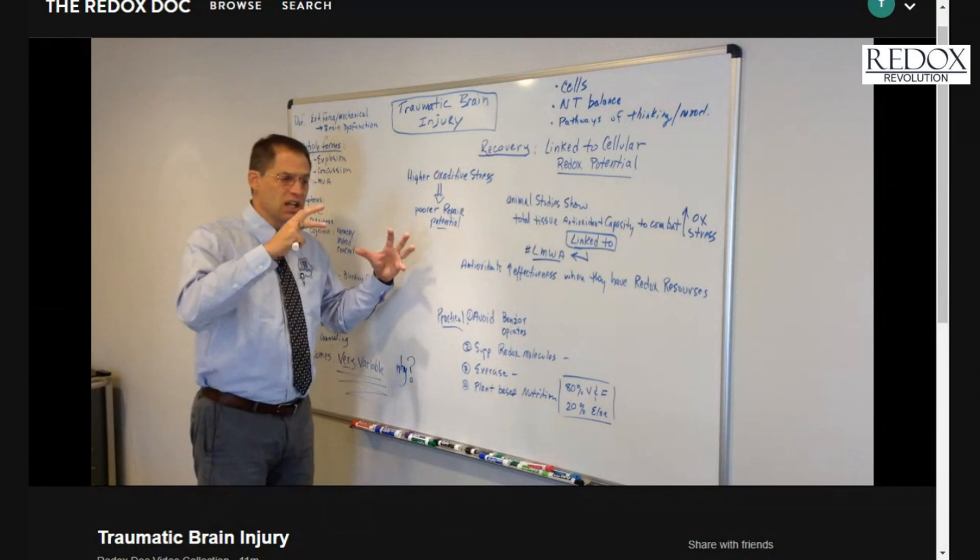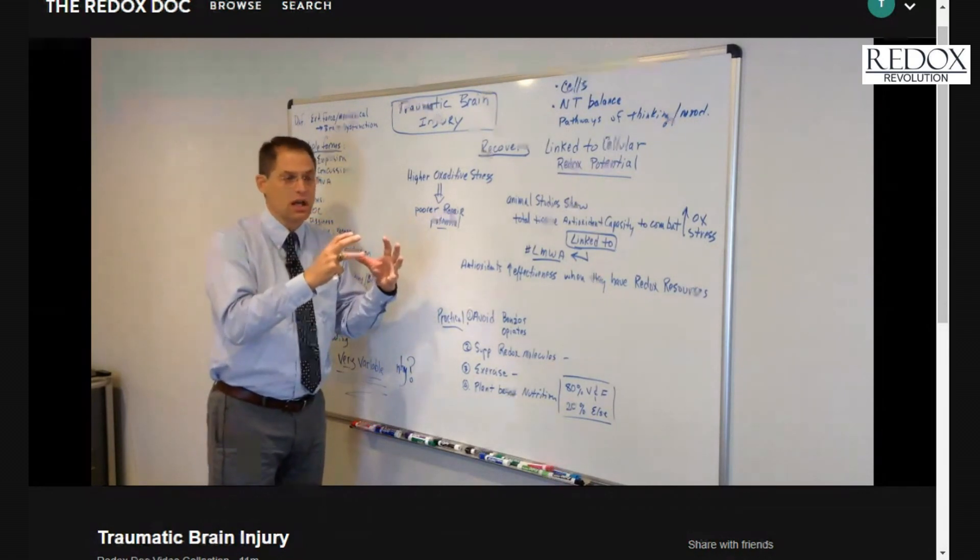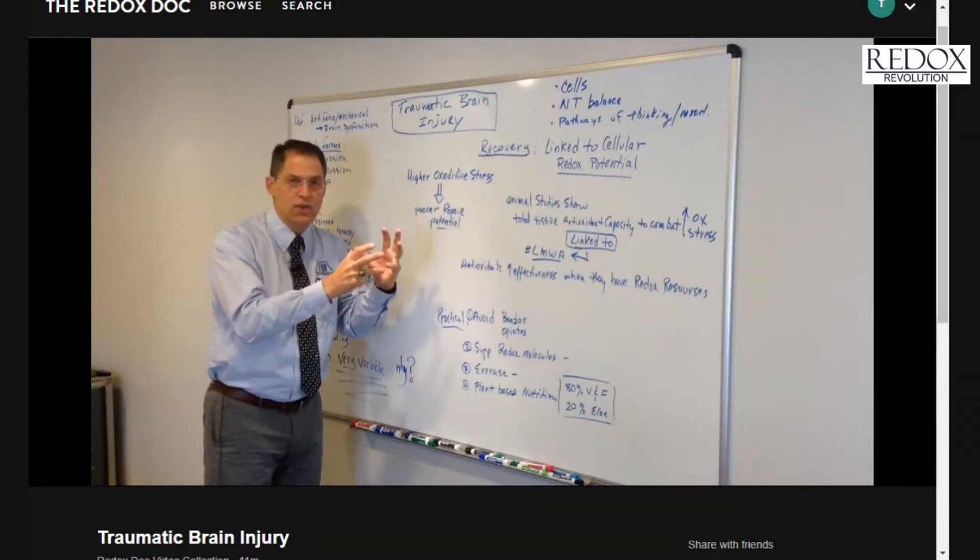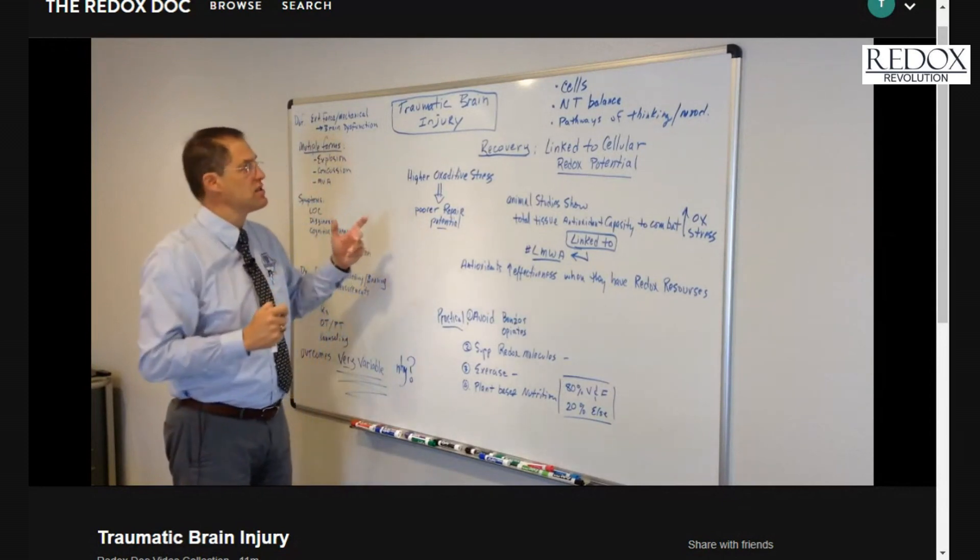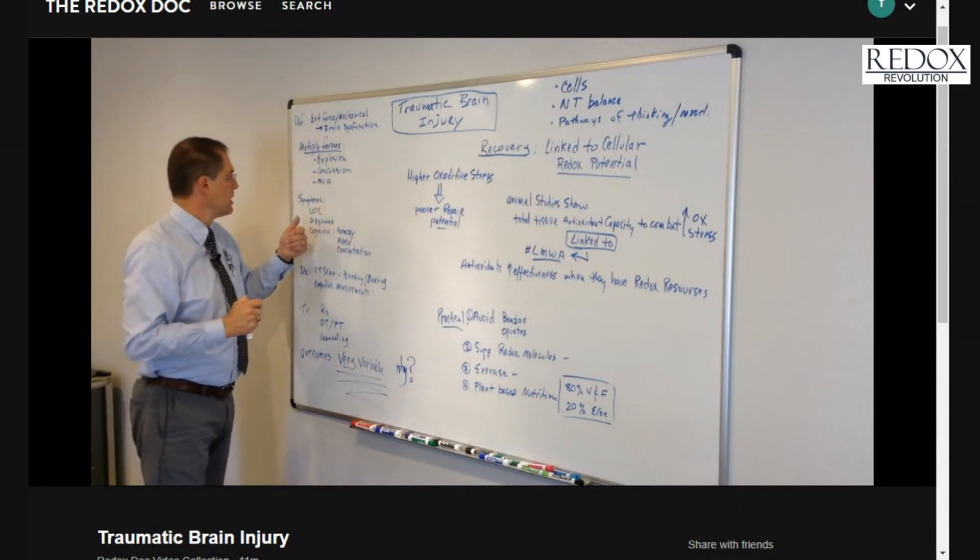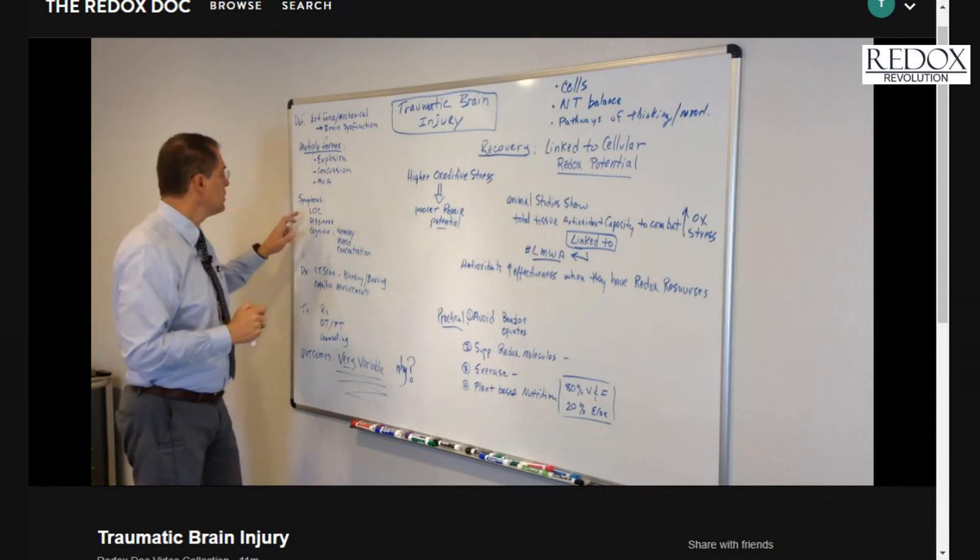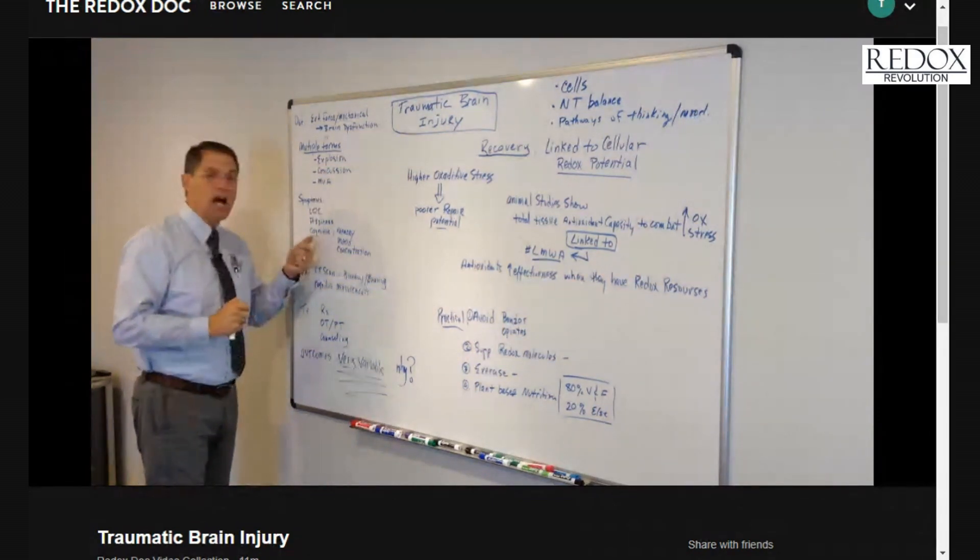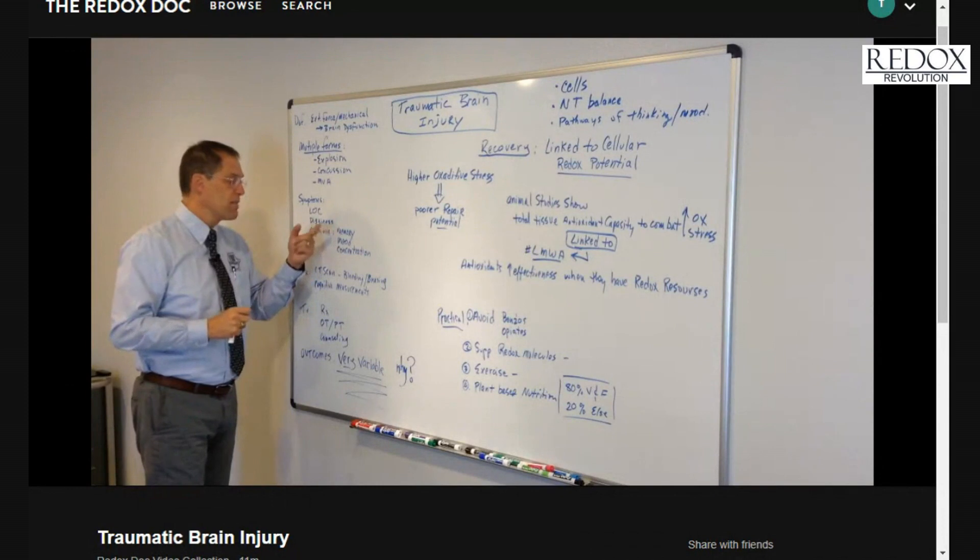The symptoms of TBI include loss of consciousness, dizziness, and cognitive dysfunction that affects memory, our mood, and the ability to concentrate. People have short-term memory loss, it's quite dramatic.